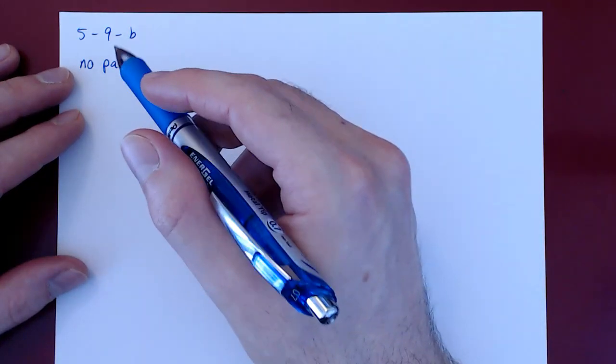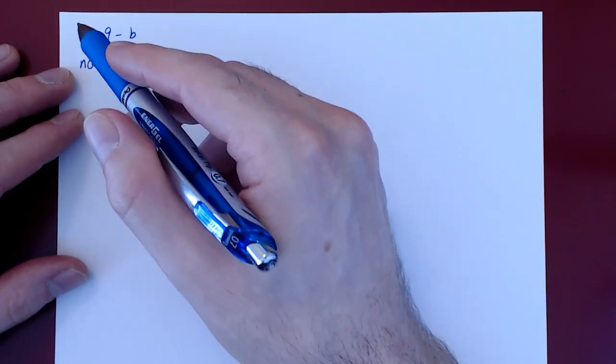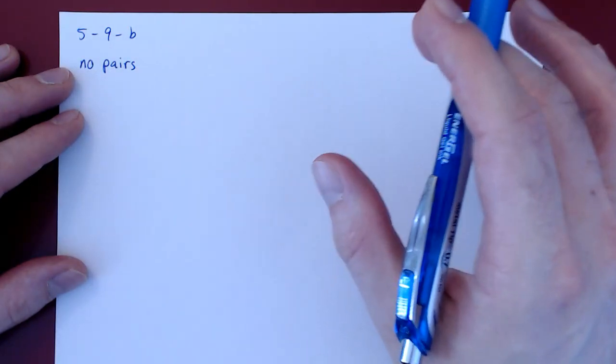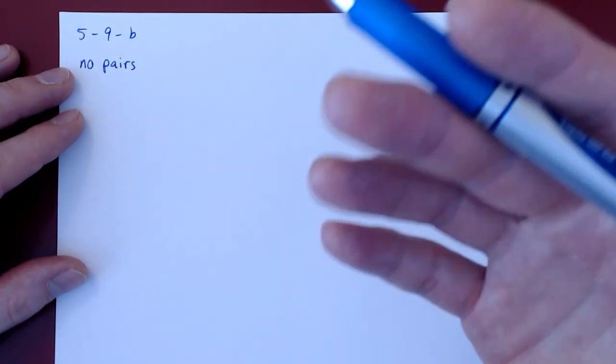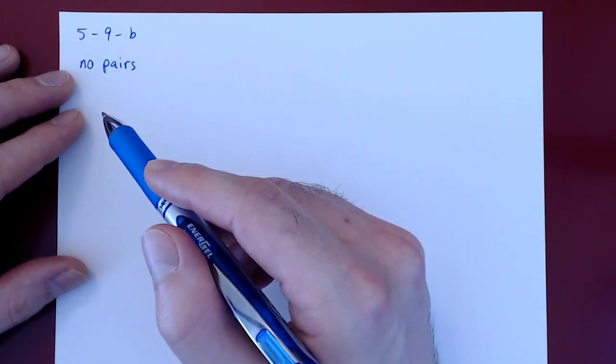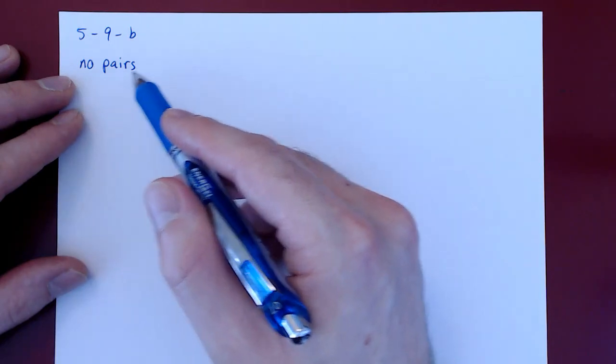Okay, so in this video, we will solve problem 9B from problem sheet number 5. If you recall, from a deck of 52 cards, 5 cards are chosen at random, and we want to count the total number of possible hands of 5 cards with no pairs.